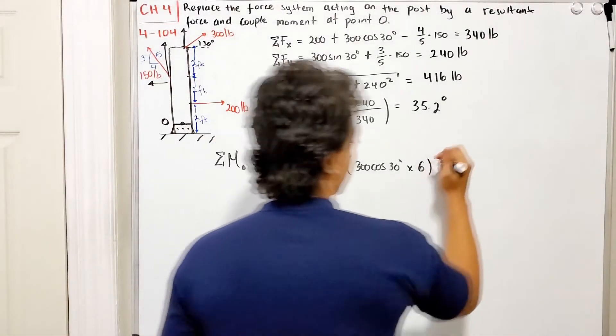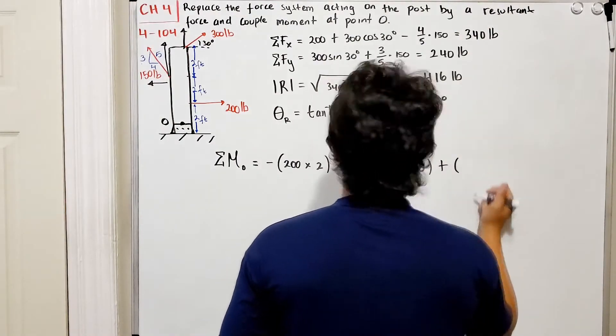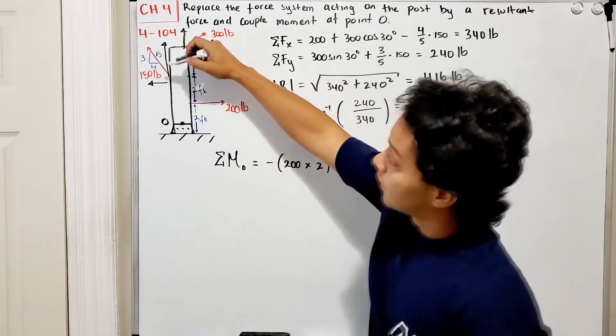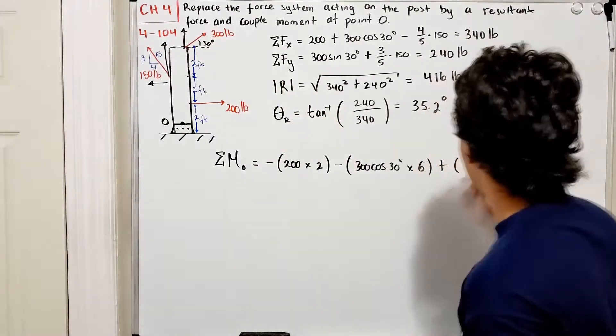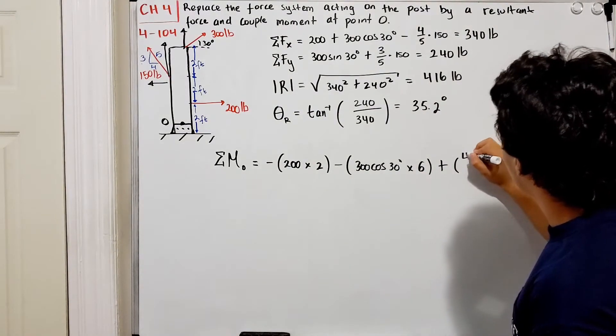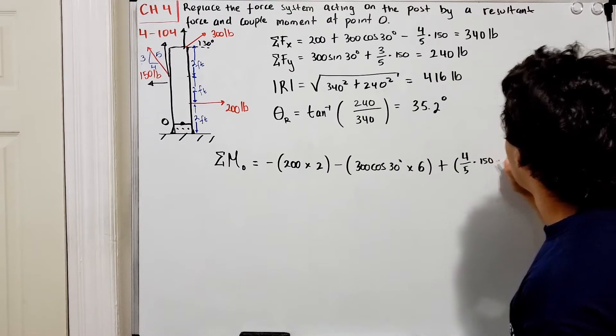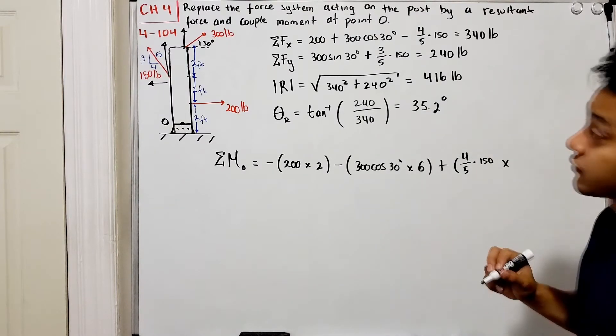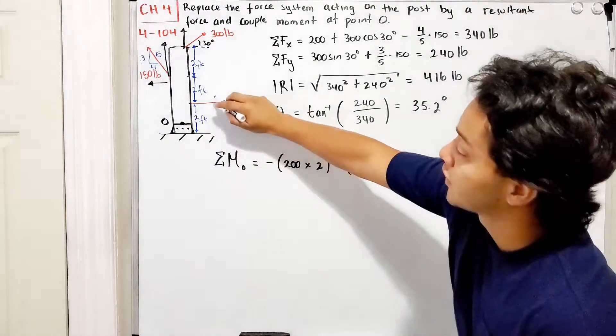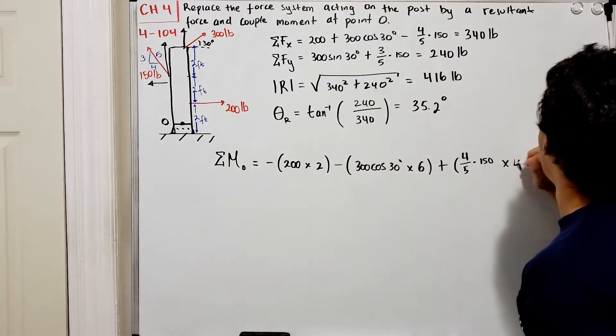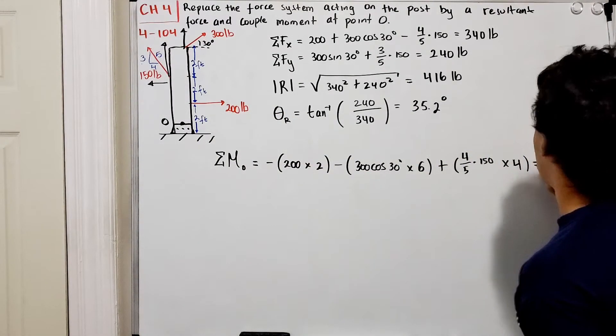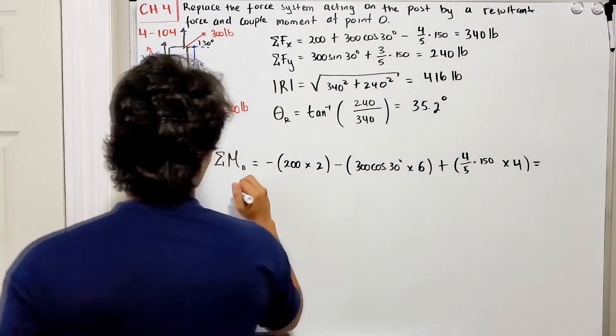How much do I have in the x direction? Well, I have four out of five, so I have four-fifths of my 150 multiplied by the distance, which is going to be 2 plus 2, equals 4.